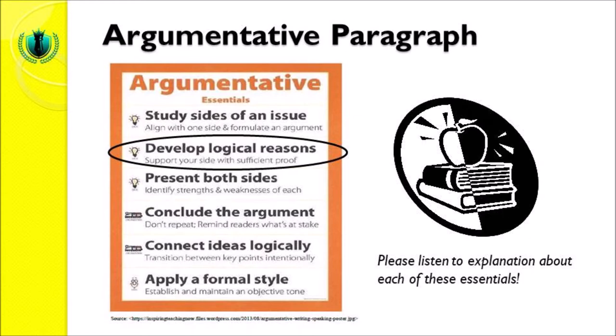The second essential of argumentative paragraph is develop logical reasons. It means that you support your side with sufficient proof. When you have an argument related to the issue you are writing about, you must develop logical reasons — meaning you write logical reasons with relevant evidence. In writing an argumentative paragraph, we do not use emotional reasons. The reasons we write must be logical, scientific, and accountable to common sense.